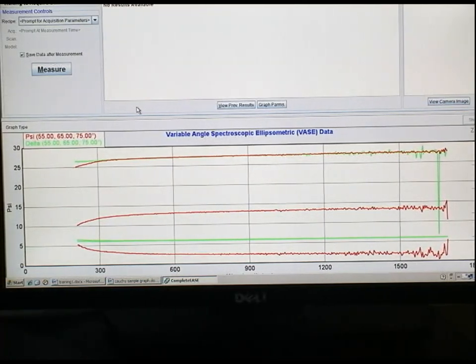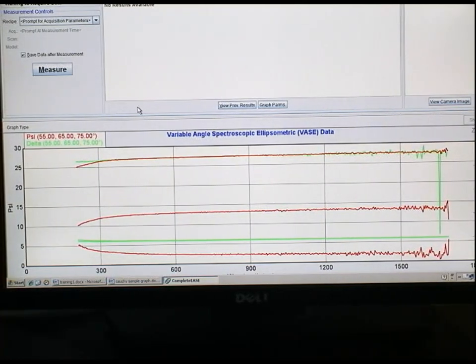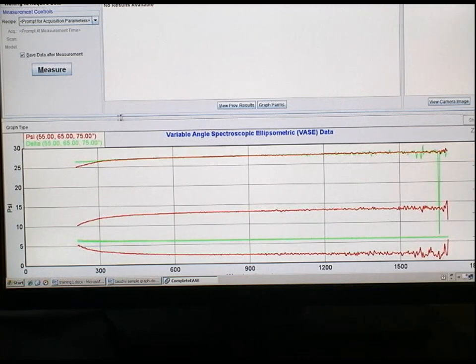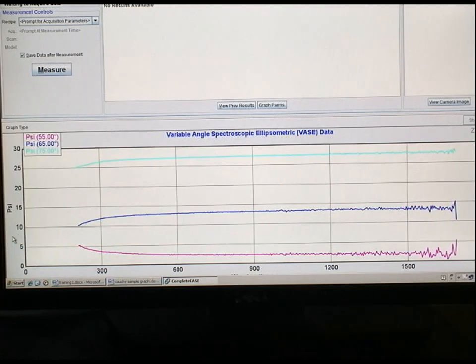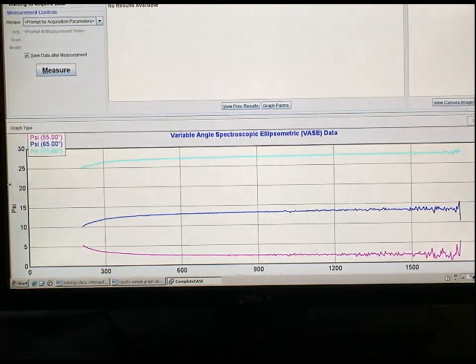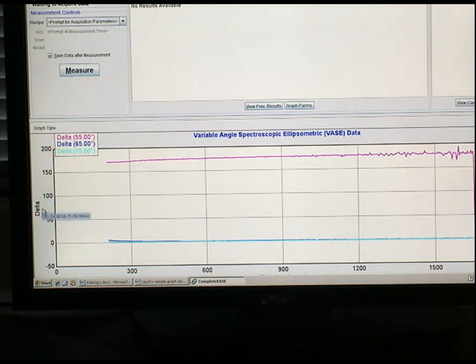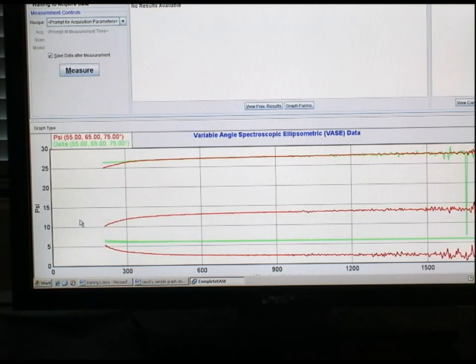So here is the result of our measurement. We have both psi and delta data shown on the screen. The psi data is given in red, while the delta data is given in green. It's also possible to view these only looking at just the psi data or just the delta data. The magnitude of the psi coefficient is on the left with respect to wavelength on the x-axis, and the axis on the right is delta.